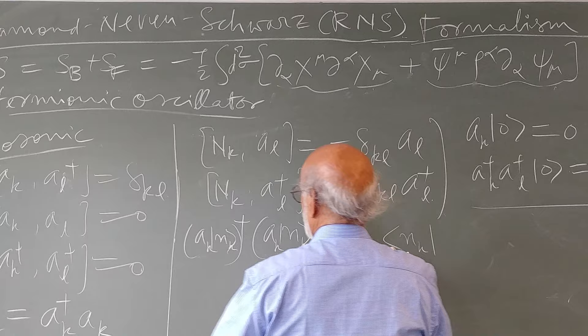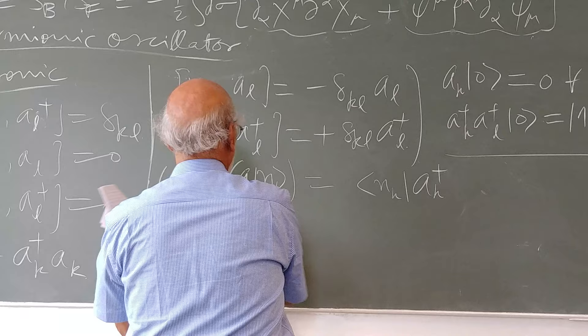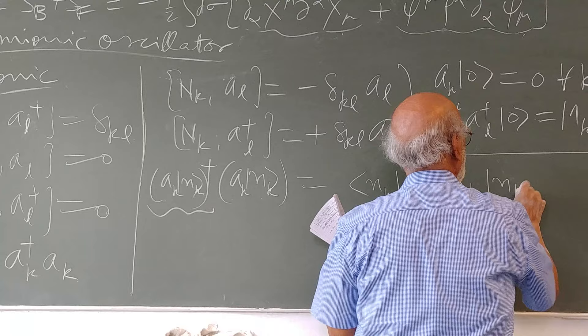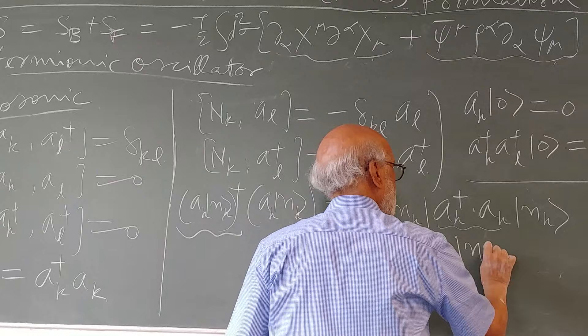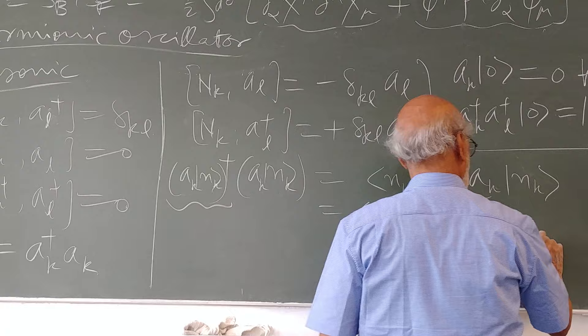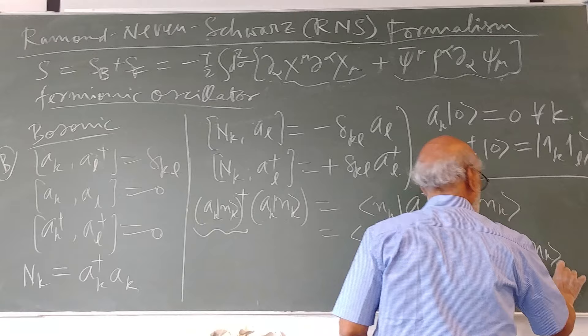This is the first part, and this is ak, nk. This equals to nk, and this is capital Nk. Little nk is the eigenvalue of this operator, capital Nk.